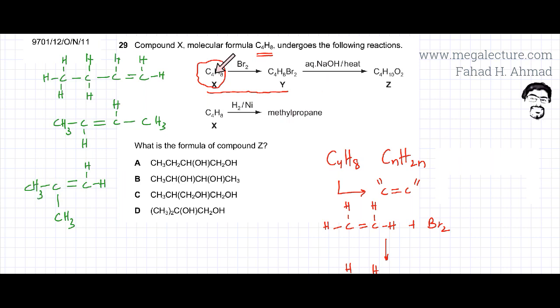So C4H8, there are basically three options that you can have for C4H8. Now I'm not sure C4H8, which of the three C4H8 this is, which particular isomer it is. But if you look at the next reaction, we have X getting converted into methylpropane.